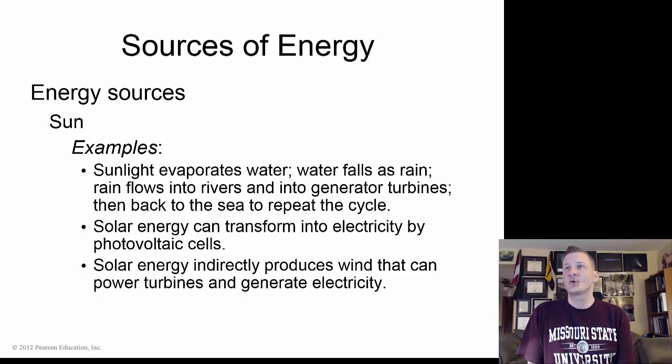Here are some sources of energy from the sun. We get a lot of energy from the sun. The sunlight evaporates water. Water causes rain. Rain flows into rivers and into generator turbines and then back to the sea, and we repeat the cycle. Solar energy can also transform into electricity by solar cells. Solar energy indirectly produces wind, which can power turbines and generate electricity. These are forms of different types of energy transformation.